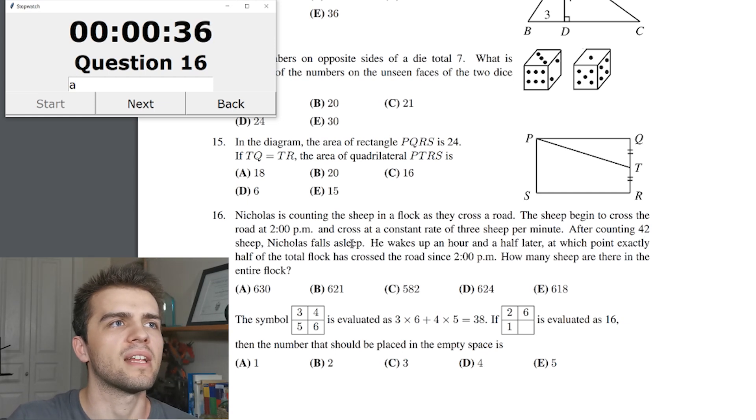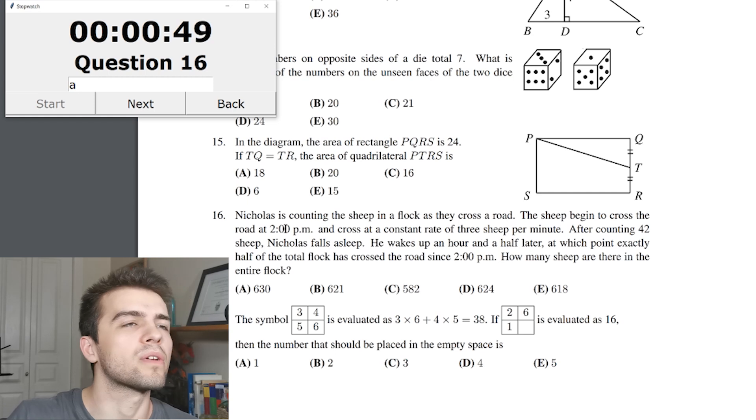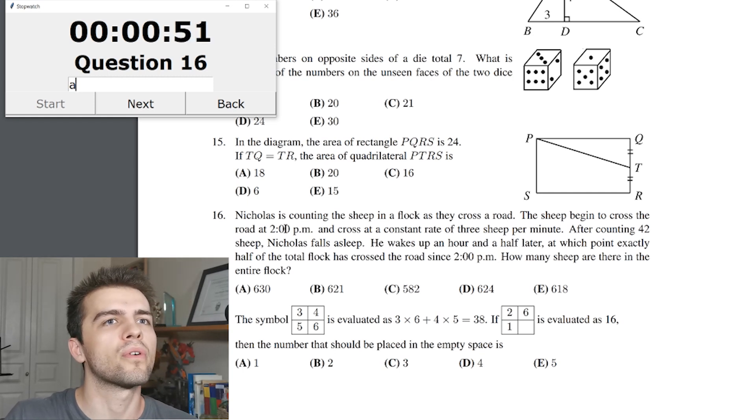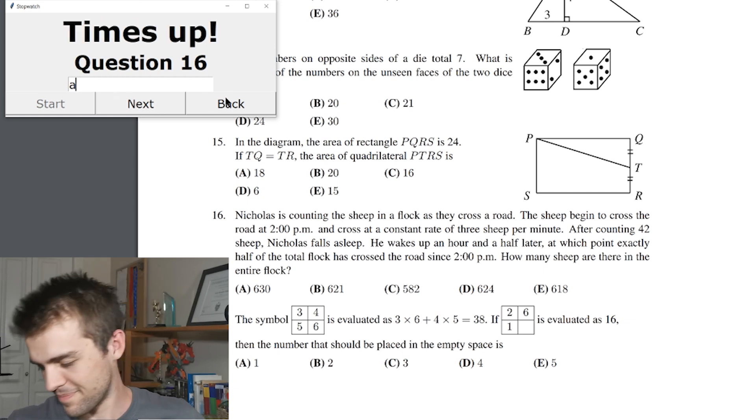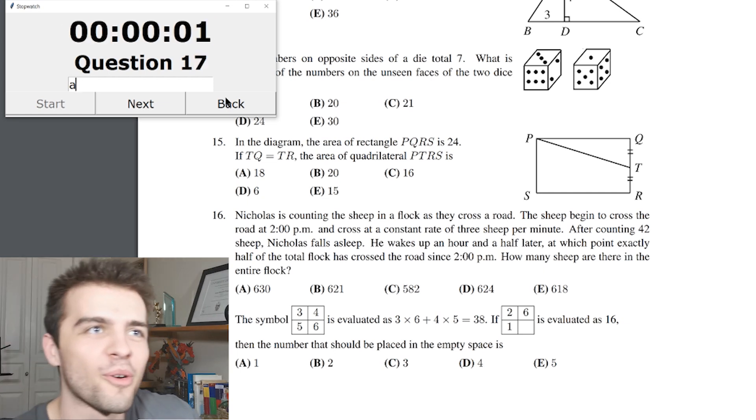He wakes up in an hour and a half later, at which point exactly half the flock has crossed the road since 2 p.m. How many sheep are there in the entire flock? So 42 sheep. Oh, this is a time crunch. 42 sheep. He falls asleep. That is 14. 14. 214. He wakes up an hour and a half later. 214. 244. 344. It's an hour and 44 minutes. 104 minutes. Times 3 is, time's up. Alright.